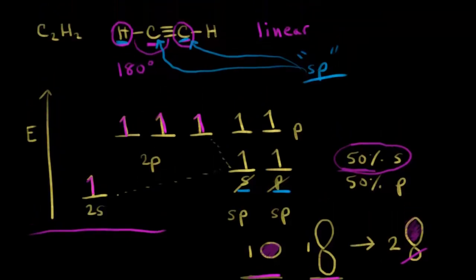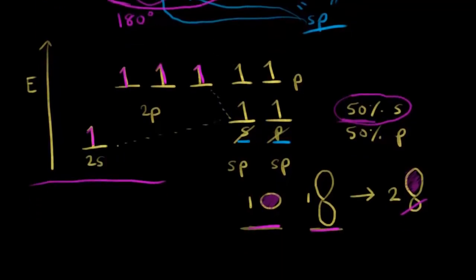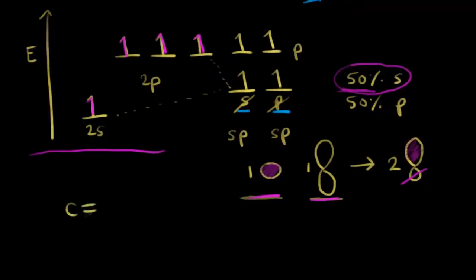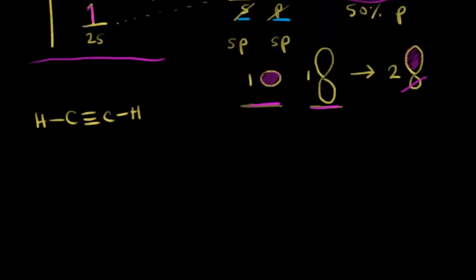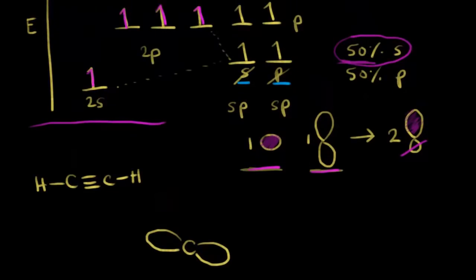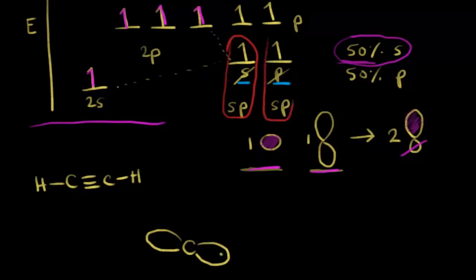Let's go back to acetylene. Both carbons in acetylene are sp hybridized. Each sp hybridized carbon has two sp hybrid orbitals. I'm going to draw in one sp hybrid orbital — ignoring the smaller back lobe — and here's the other sp hybrid orbital on this carbon. Each sp hybridized carbon has an sp orbital with one valence electron in it, and another sp hybrid orbital with one valence electron in it.